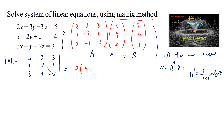2 times [(-2)(-2) - (-1)(1)] = 2 times [4 + 1] = 2 × 5 = 10. Minus 3 times [(1)(-2) - (3)(1)] = -3 times [-2 - 3] = -3 × (-5) = 15. Plus 3 times [(1)(-1) - (-2)(3)] = 3 times [-1 + 6] = 3 × 5 = 15.